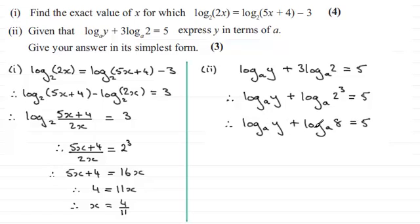Now when we've got one log plus another log, again you should be familiar with the rule that this is the same as multiplying our two values together. So it's going to be logₐ(8y) = 5.